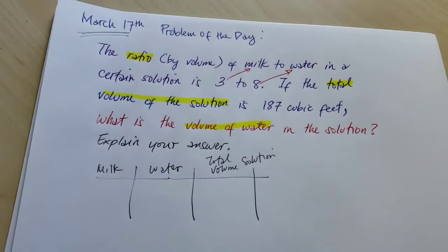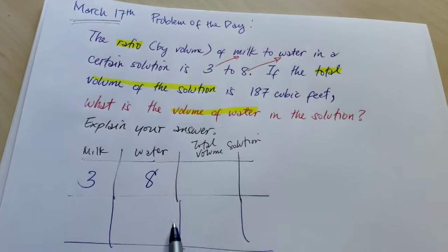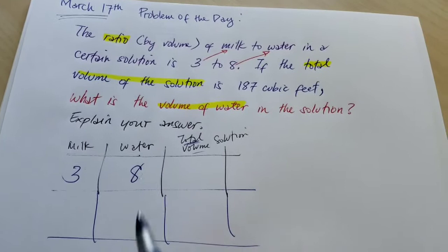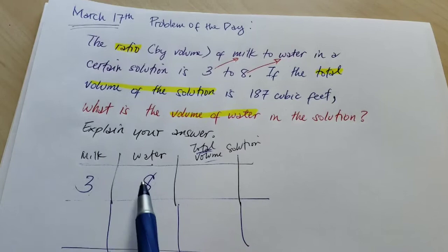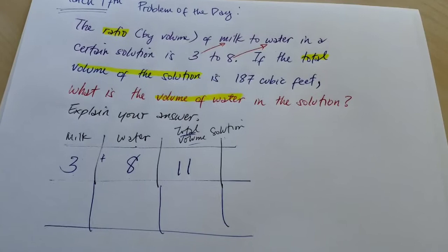So once I have these, I can fill in the boxes. Here we go. So milk is 3 and water is 8. When you say total volume of the solution, that means you're gonna mix milk and water. So if you mix this two, 3 cubic feet and 8 cubic feet of water, that gives us 11 cubic feet of solution. So we're adding them up, these two to get 11.